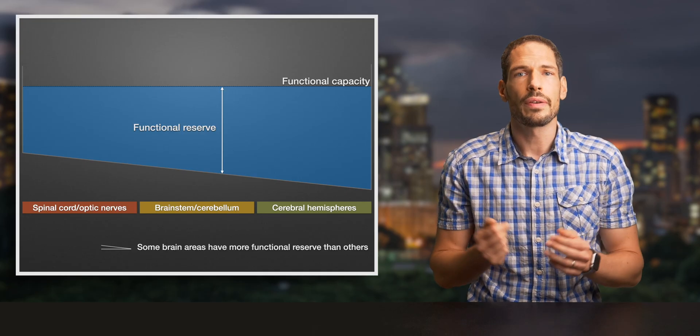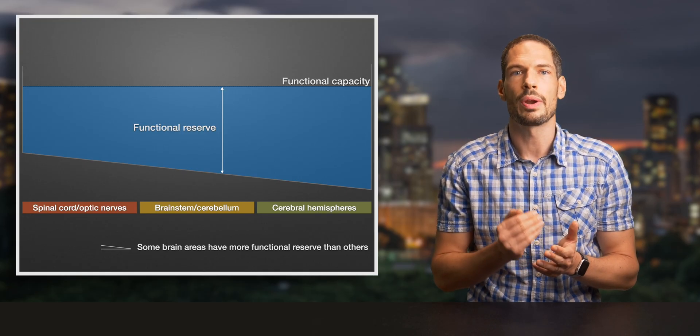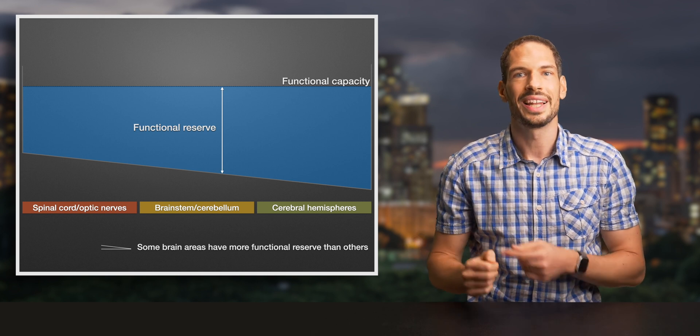The spinal cord and the optic nerves are relatively thin structures and they transfer an enormous amount of information. Signals there can't be relayed to bypass areas that have been damaged by an inflammation, and therefore lesions in these areas hardly go unnoticed. On the other hand, the cerebral hemispheres are relatively large — they have some redundancy and plasticity. In the topographical model, the functional reserve is represented by the depth of the pool.